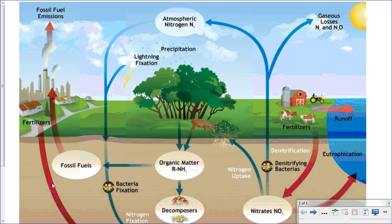Hello everyone. I'm going to use this one single slide to talk about everything you need to know about the nitrogen cycle. That includes the different chemical forms of nitrogen throughout the biosphere, the different reservoirs and what the major reservoir is, the cycling pattern going from one reservoir to another, the names of those different processes, the human impacts, and the involvement of bacteria in the various different processes.